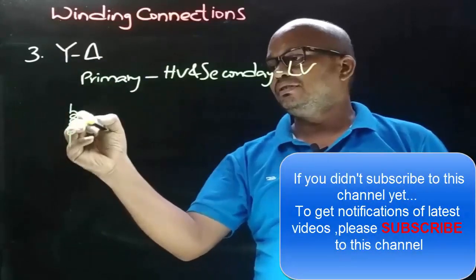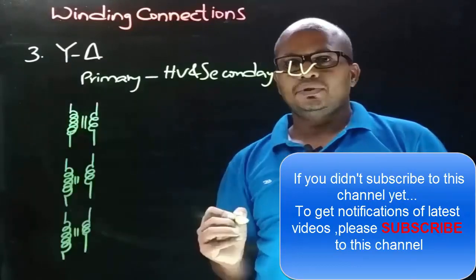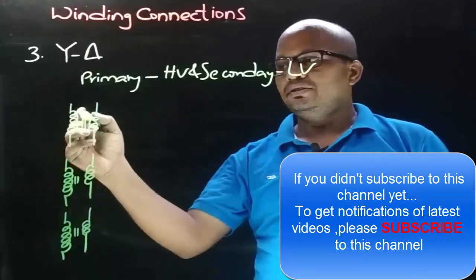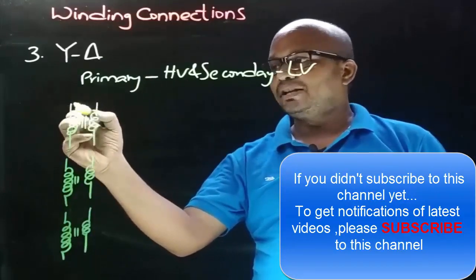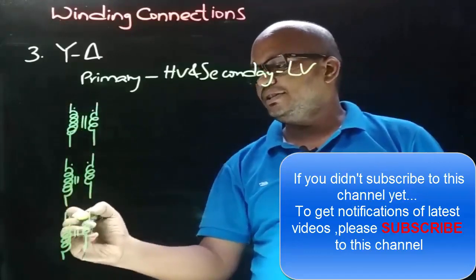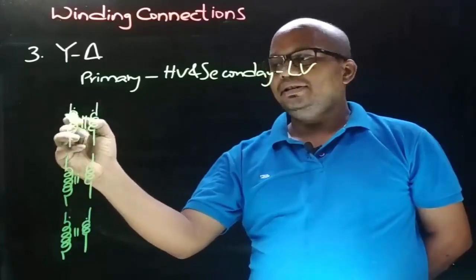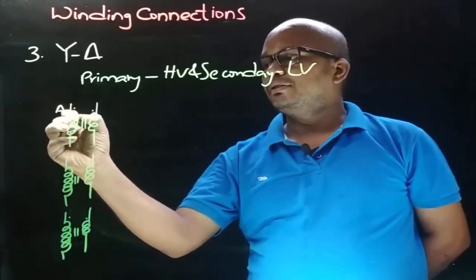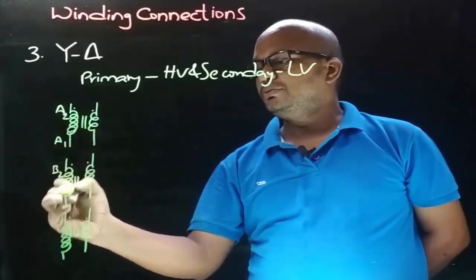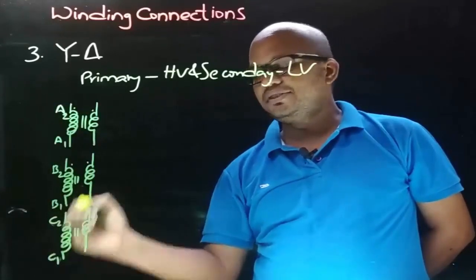First let's consider the bank of three single-phase transformers and give the notations. This is the HV side, so HV side notations are in capital letters. Let's consider the dotted terminals on both primary and secondary sides. On the primary side the terminals are capital A2, A1, B2, B1, C2, and C1.